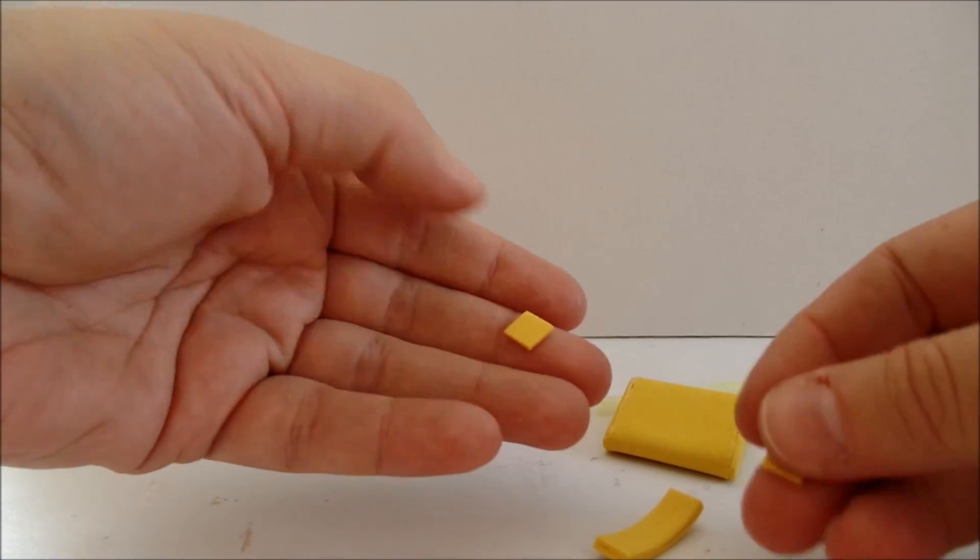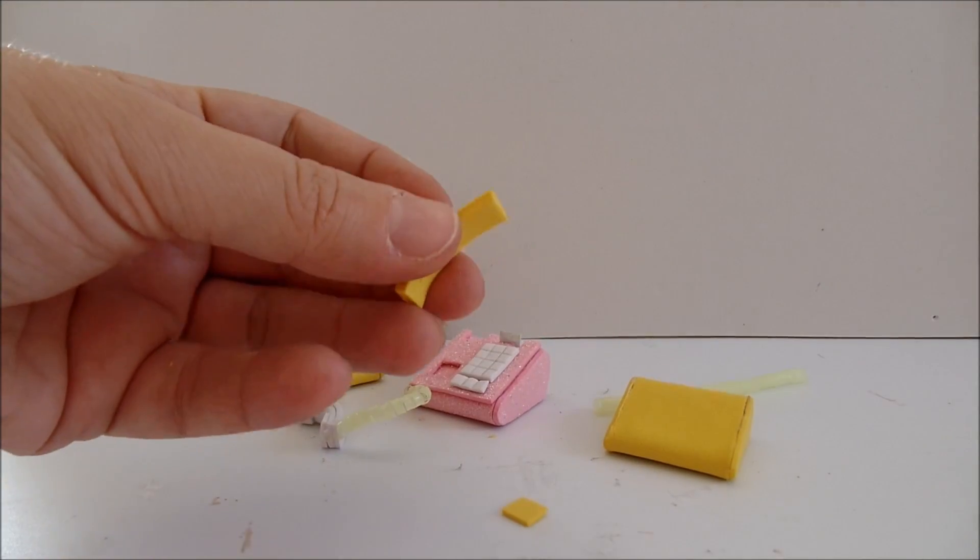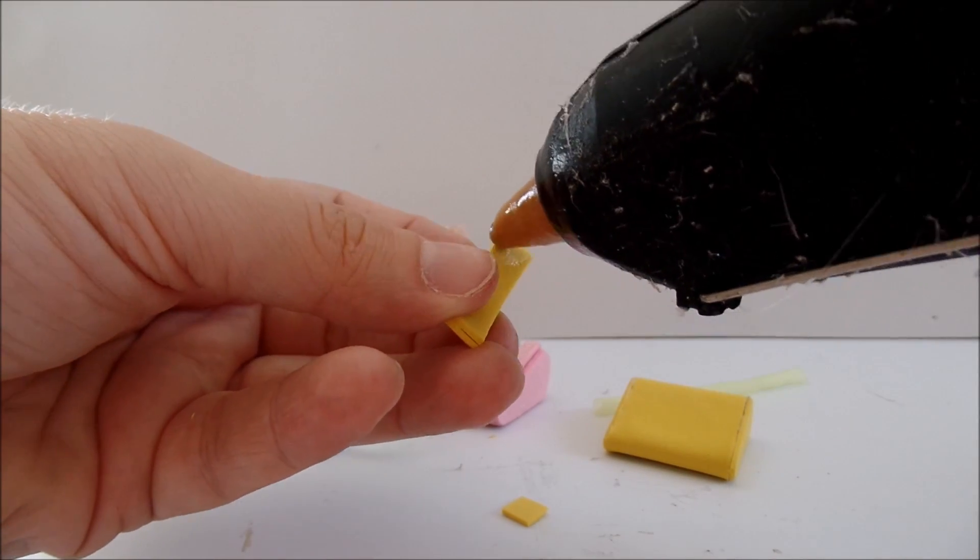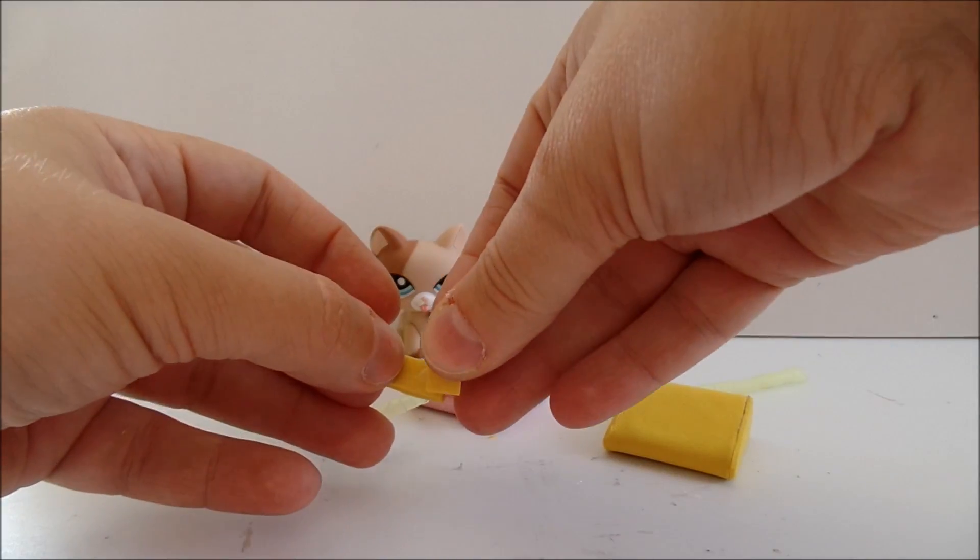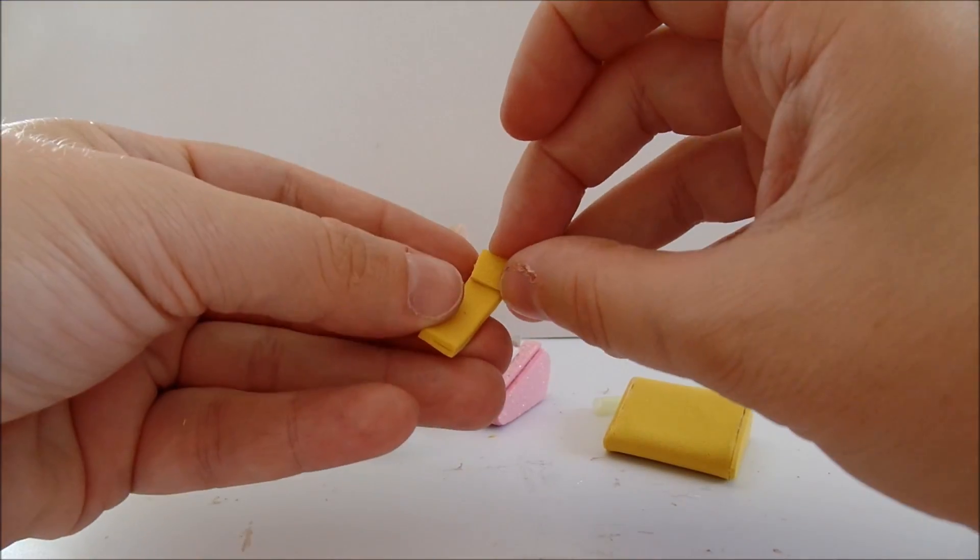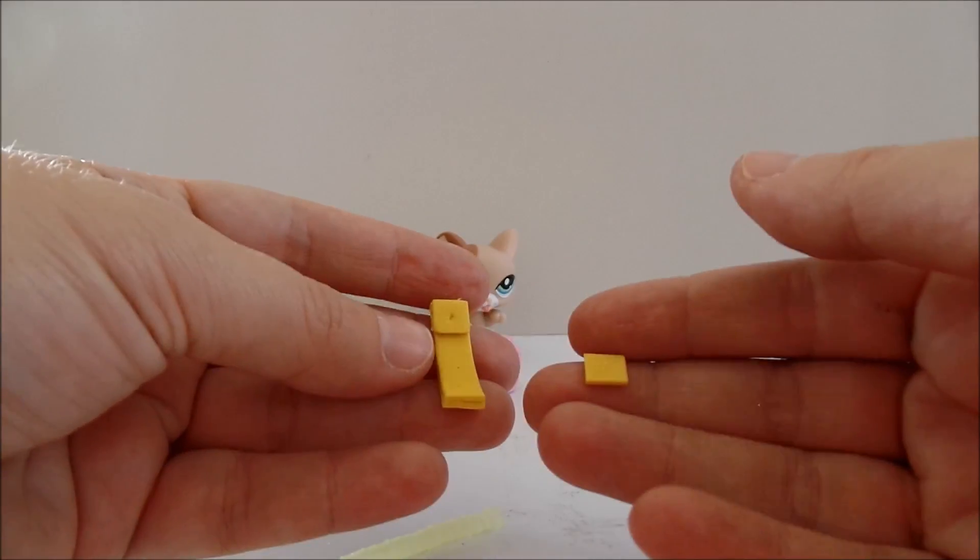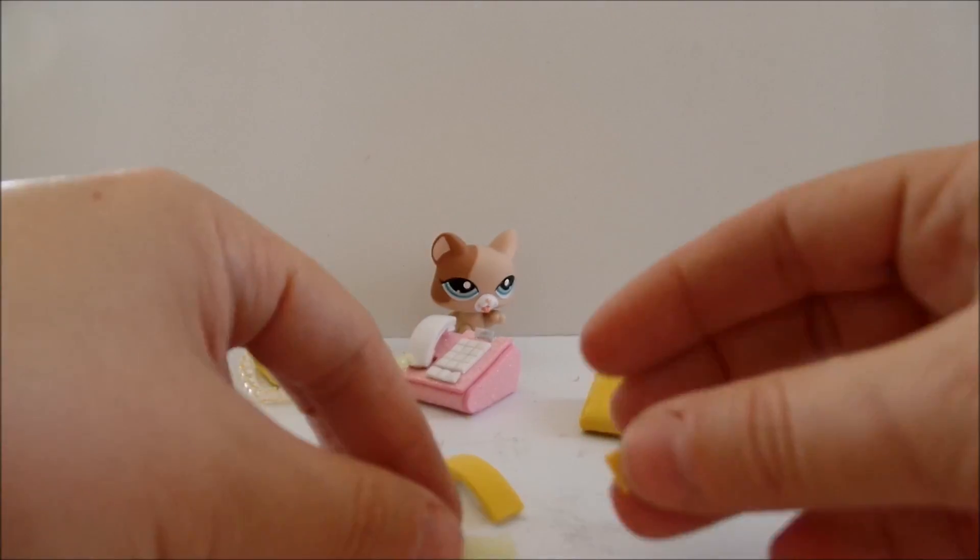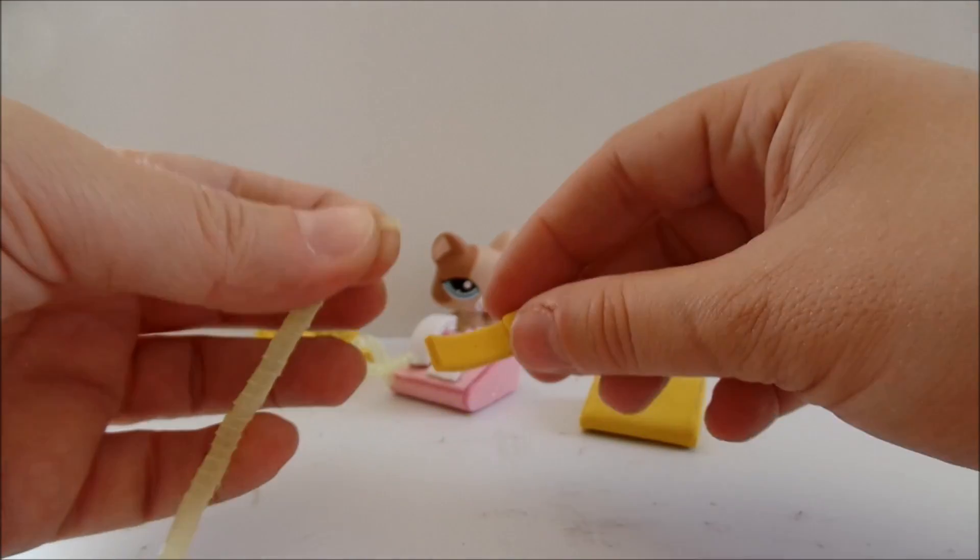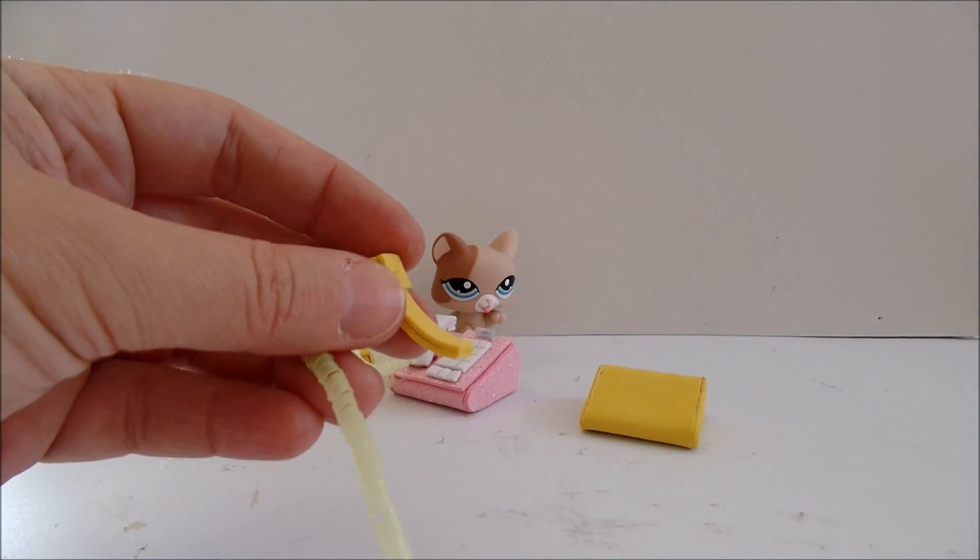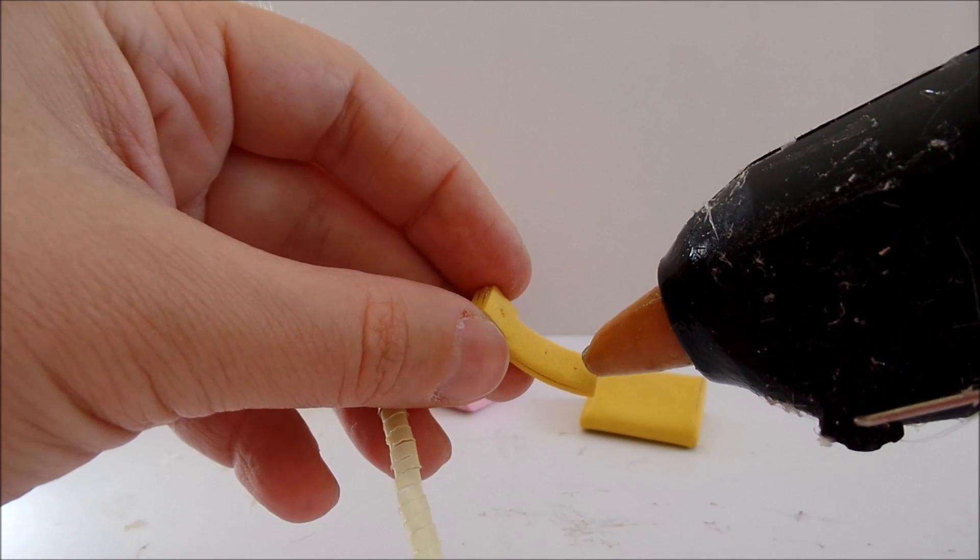Take two small squares. Glue one of the squares at the top. Now take the three parts, the handset, the square and the cord. And glue the cord at the bottom of the handset.